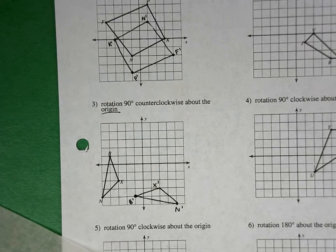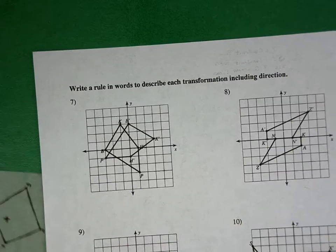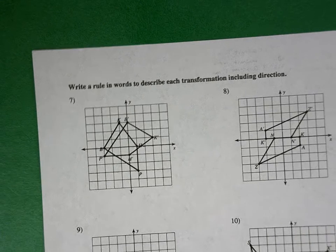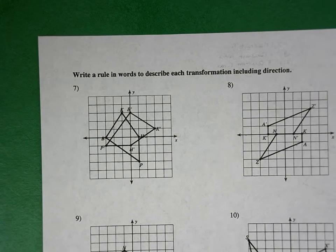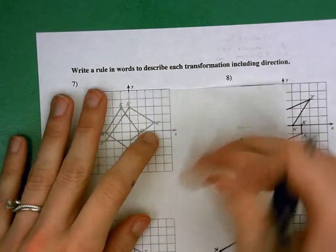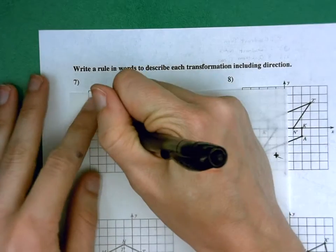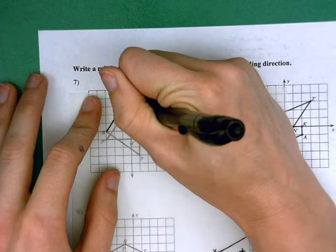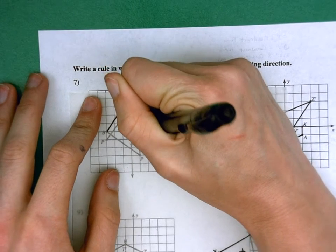Okay, so the second part of your homework assignment is on the back, in which case you're just supposed to describe the transformation that has occurred. Again, patty paper might come in handy as you're trying to figure out exactly what took place. For example, when we're looking at number 7, I might take this and trace my original, my pre-image. And again, remember, we can tell which one's a pre-image by which one doesn't have those primes.